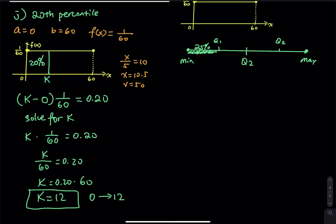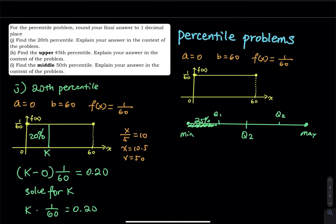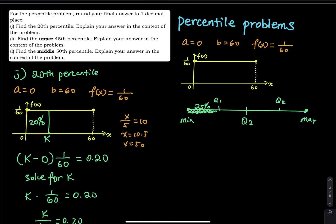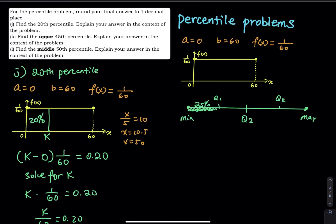That's how you answer the first percentile question. In the next problem you see the phrase 'upper 45 percent.' Upper 45 percent means you need 45 percent on the right-hand side — as long as you see the word 'upper,' the area goes on the right.